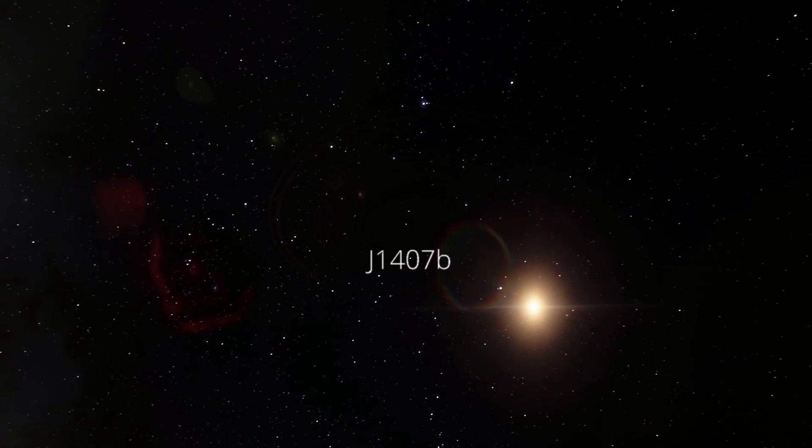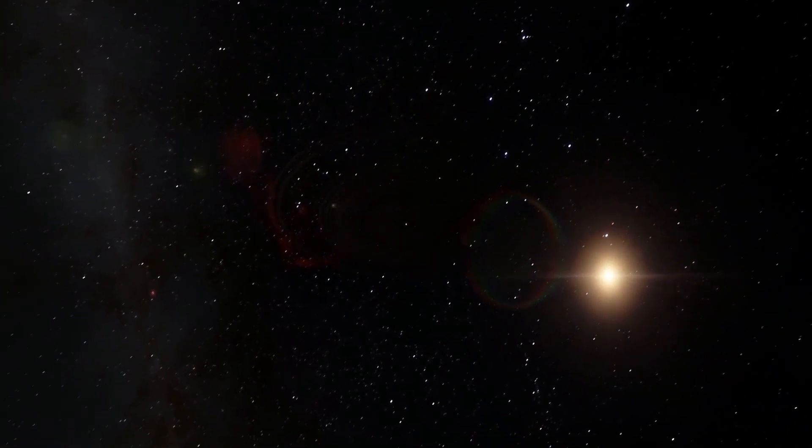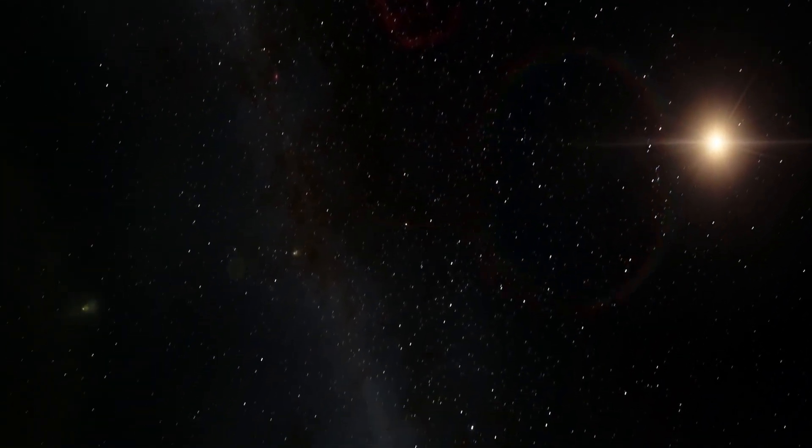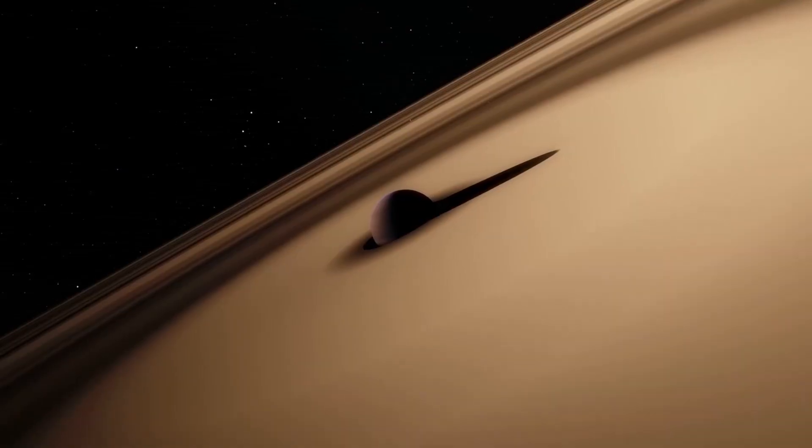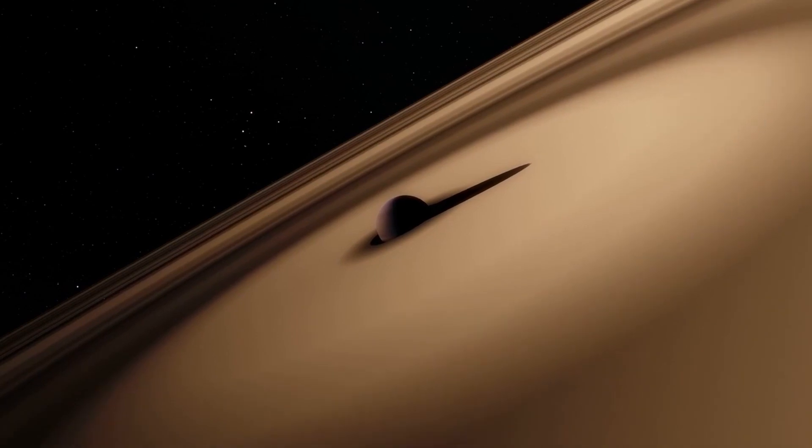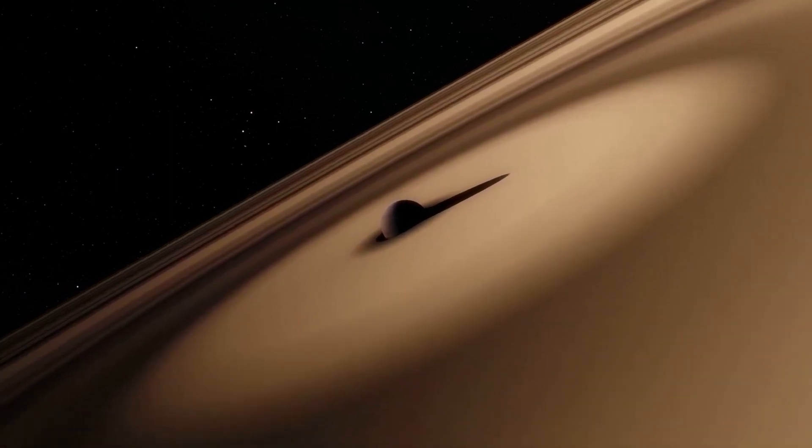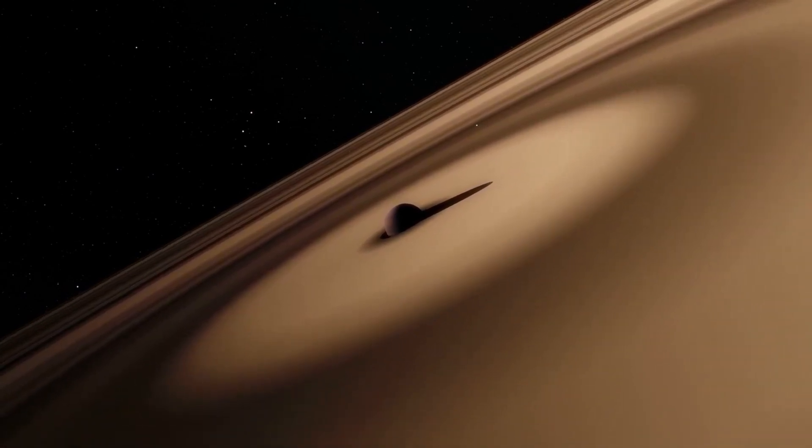is widely known for the massive size of its rings, which are approximately 640 times the extent of the rings found on Saturn. The planet itself is regarded as the first possible exoplanet or brown dwarf with a ring system.